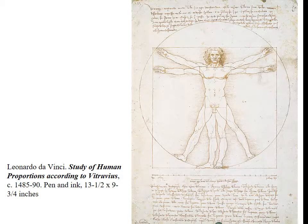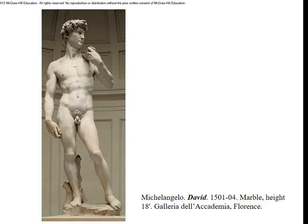Here's Leonardo's study of human proportions according to Vitruvius, based on his in-depth research into many different fields. This interest in the human body was carried to a wonderful extent by his younger contemporary, Michelangelo. This is the famous David from 1501 to 1504. It's now indoors — it once stood outside for a long time, but marble is easily dissolved by industrial pollution. He's about 18 feet tall.